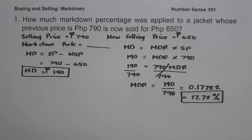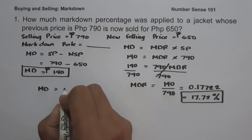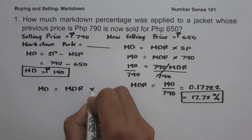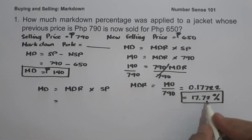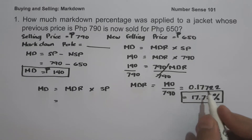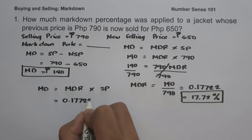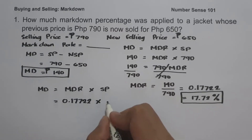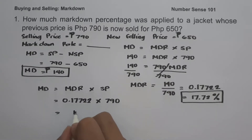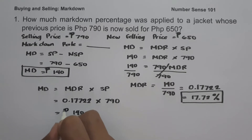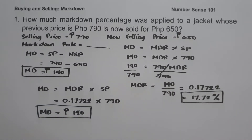To check our answer, let us use the formula: markdown equals markdown rate multiplied by selling price. Our markdown rate is 17.72%, which written as a decimal is 0.17722, multiplied by the selling price of 790. If we multiply this, we get 140 pesos. This is our markdown, and as you can see, we come up with the same markdown, confirming our answer is correct.